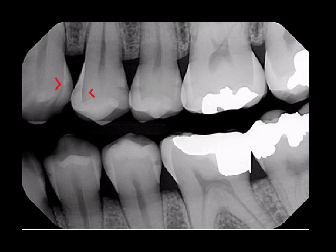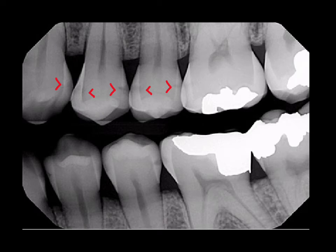Here we see decay where there's a little radiolucency in the dentin — this is beyond incipient decay because it is now involving the dentin, so this would need intervention. A little more pronounced on the distal of number 12. We can see it on the mesial and distal of 13. It's hard to identify decay on the mesial of 14 due to interproximal overlap — this horizontal overlap is why we take both an anterior and a posterior bite wing.